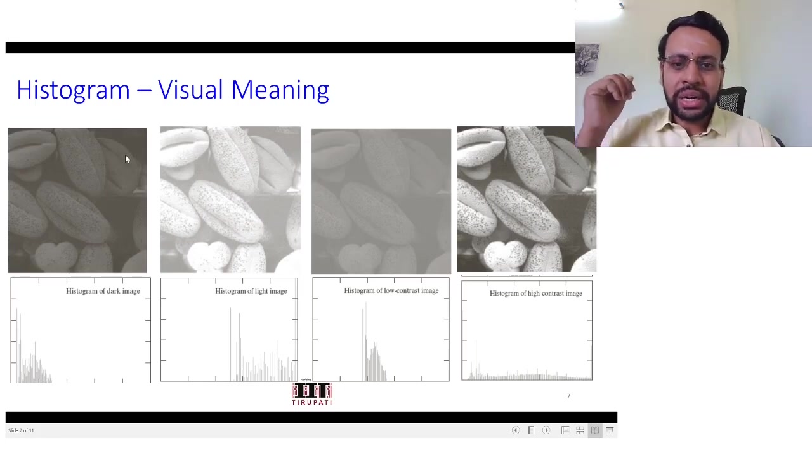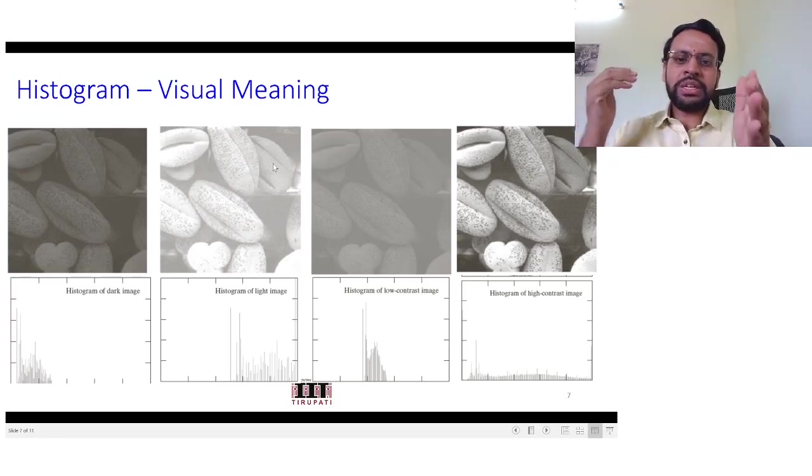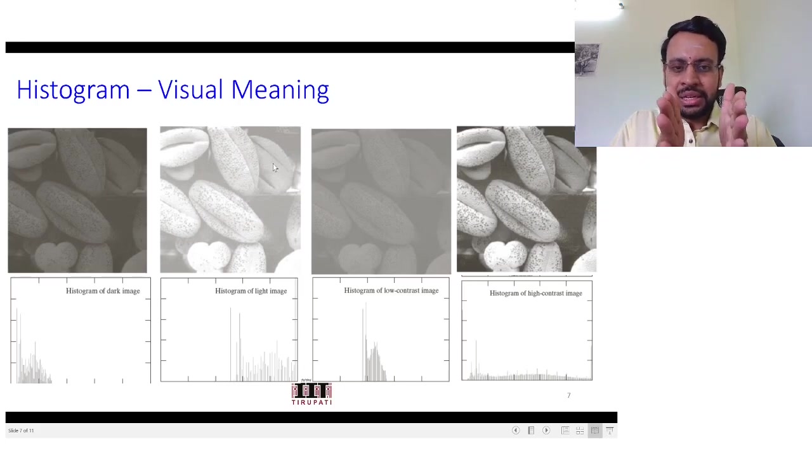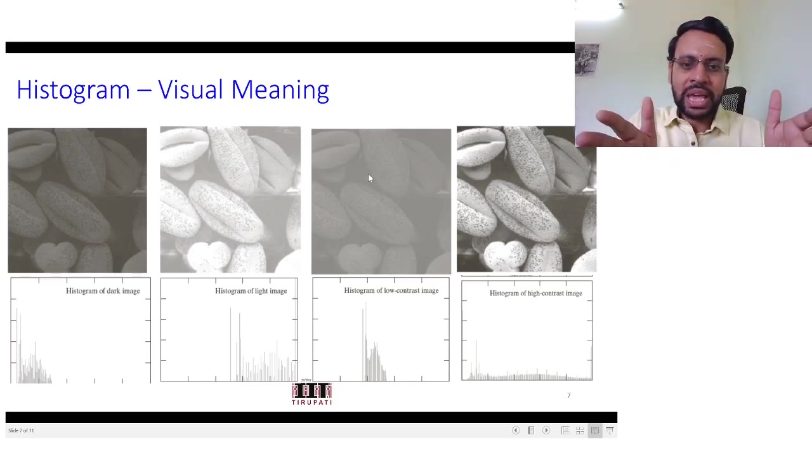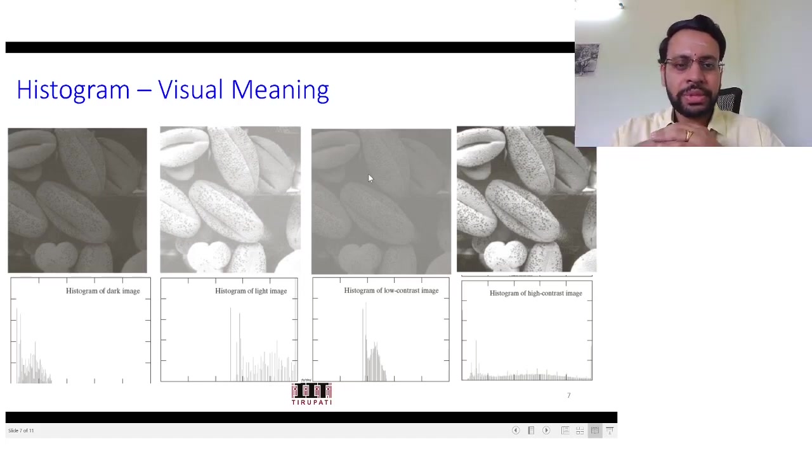And here is an image where it is neither dark nor light but it's a low contrast image, the distribution being very narrow. And this is the image where you could say that it's a high contrast image, as there is an even distribution, almost even distribution of intensities in the histogram.